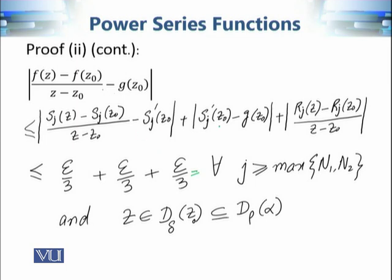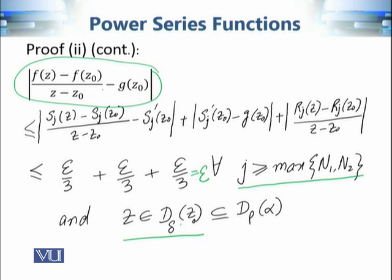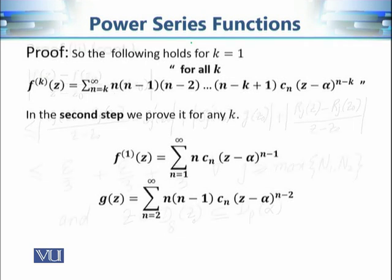Under all three conditions — j ≥ max(N₁, N₂) and z within the disk of radius δ centered at z₀ (contained in the domain of f) — we have |B| < ε/3, |C| < ε/3, and |D| < ε/3. Their sum is therefore less than ε, proving the full expression is less than ε under these conditions.